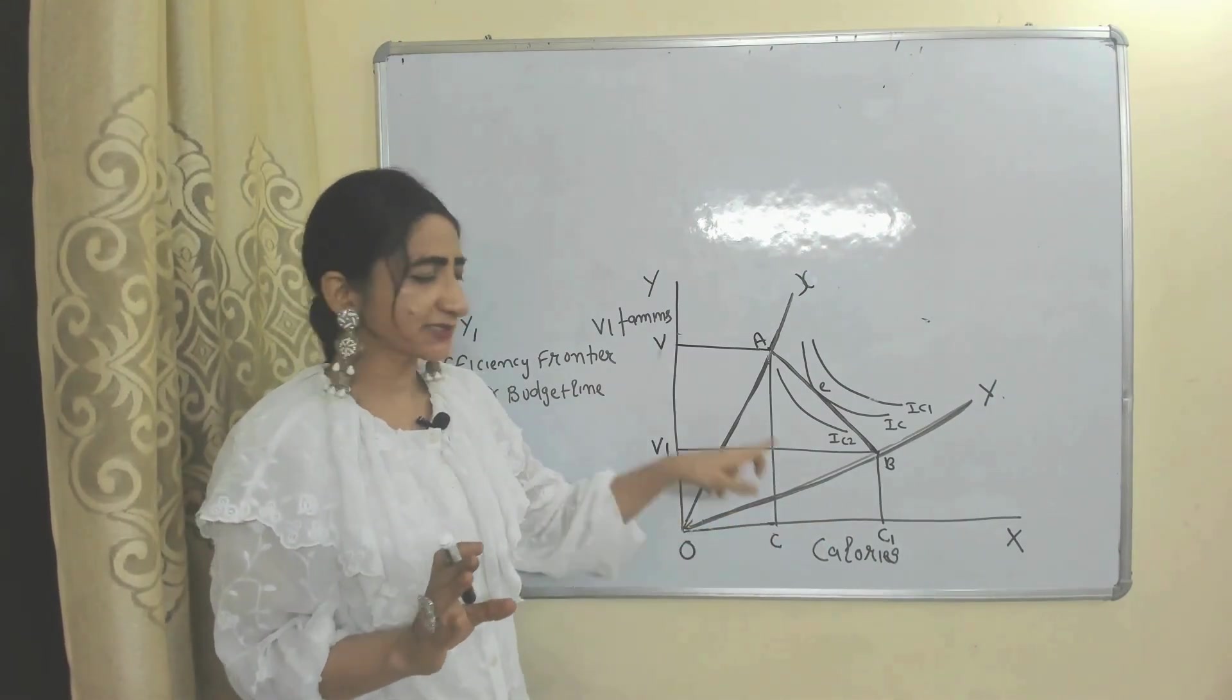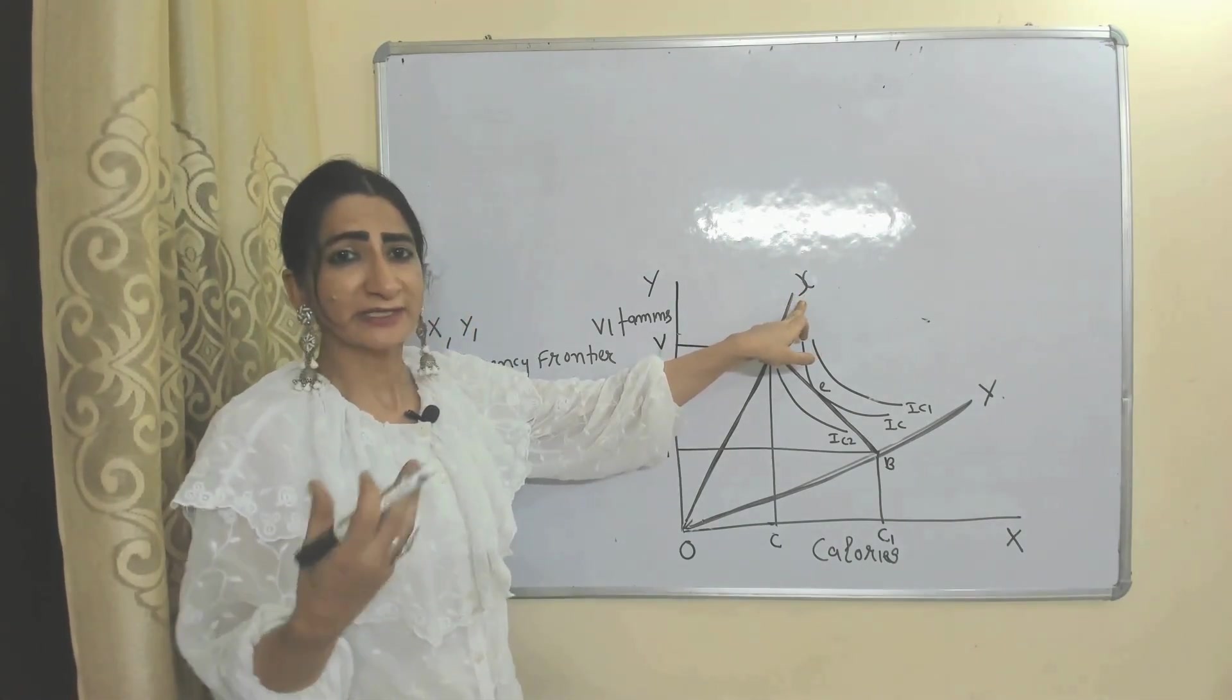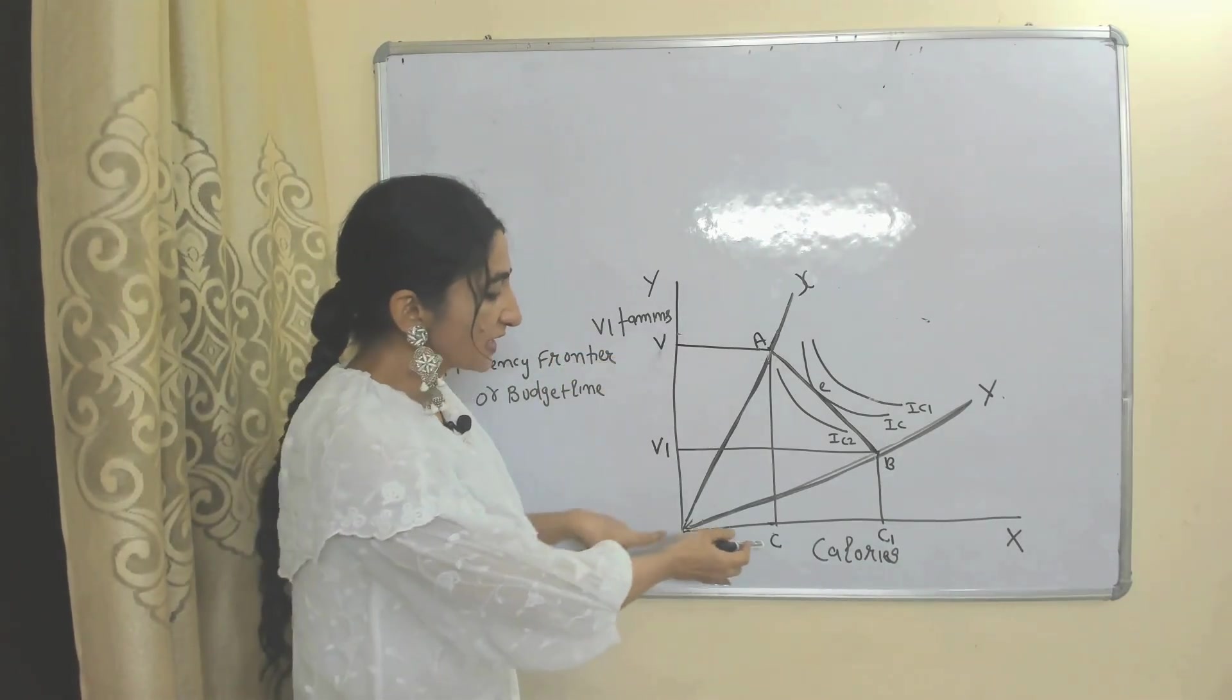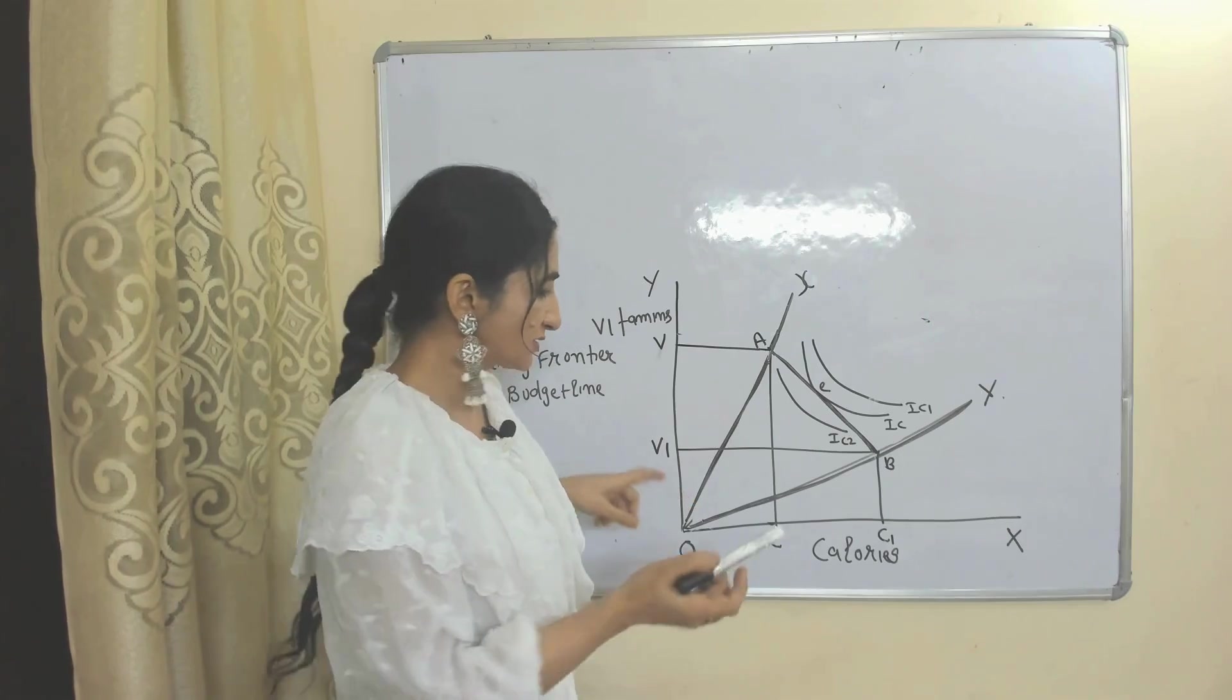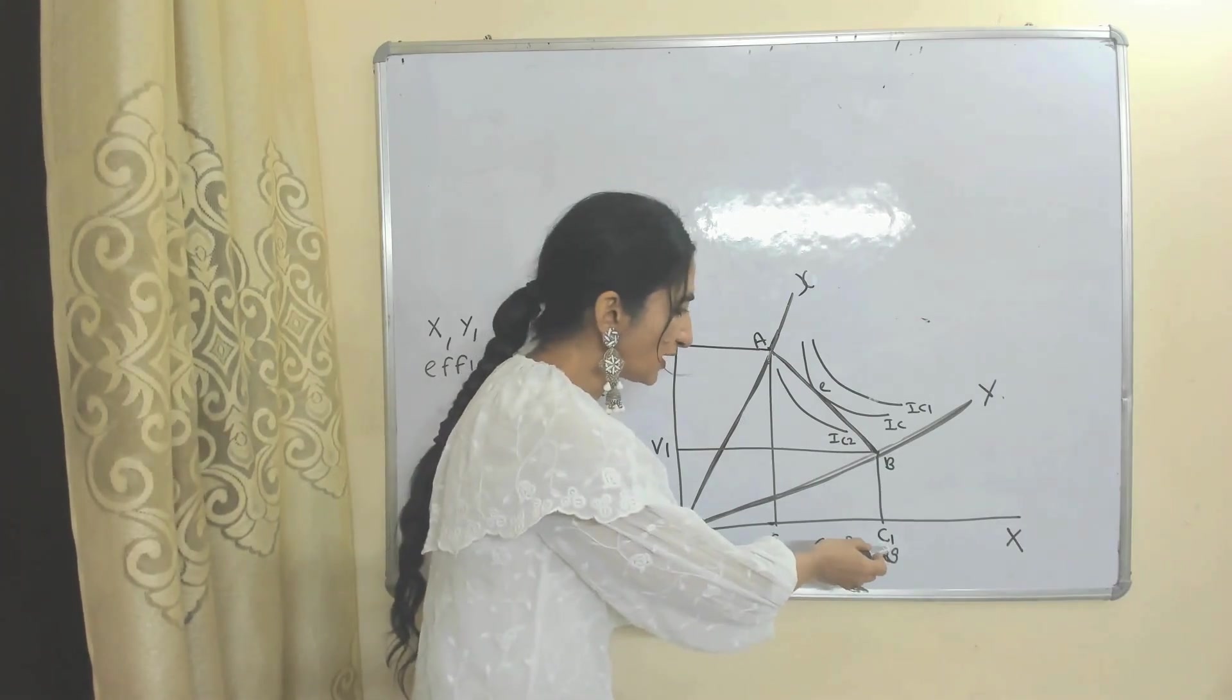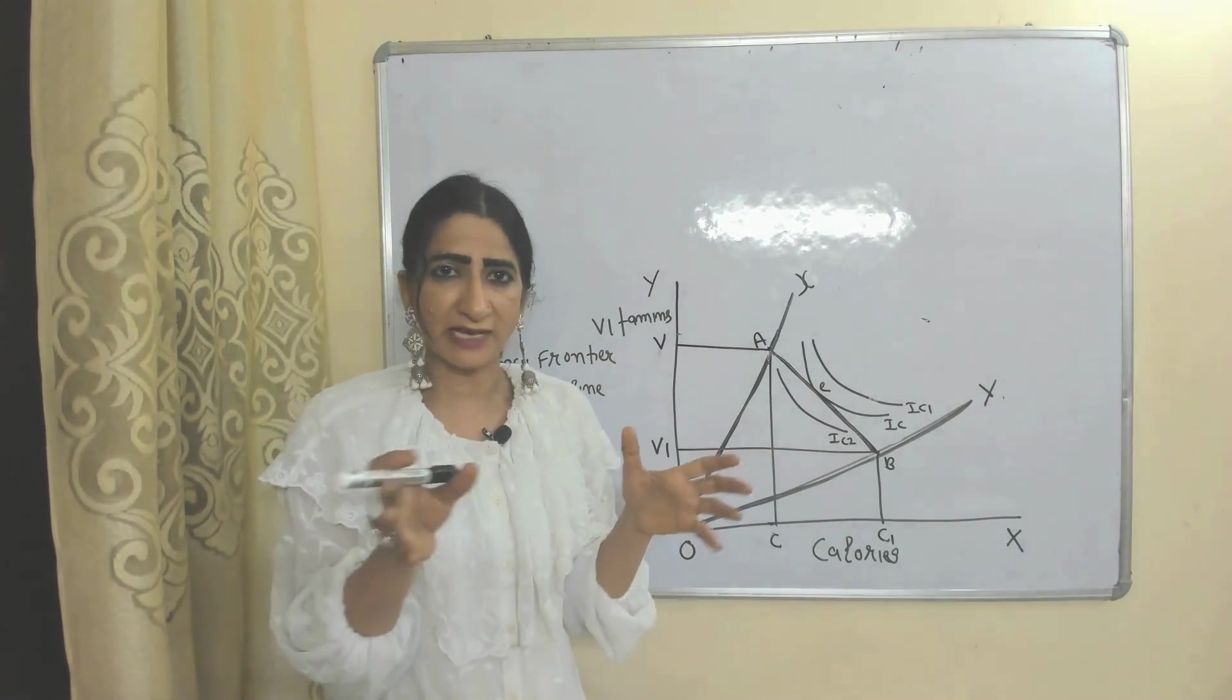On the X-axis we have calories, on the Y-axis we have vitamins. If the consumer only buys food X, then he will consume OV amount of vitamins and OC amount of calories. But if he buys only food Y, then he will consume OV1 amount of vitamins and OC1 amount of calories.